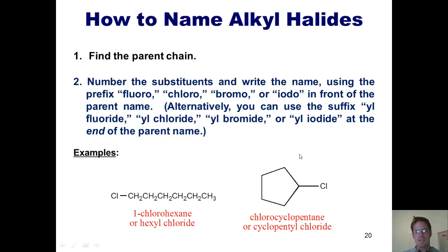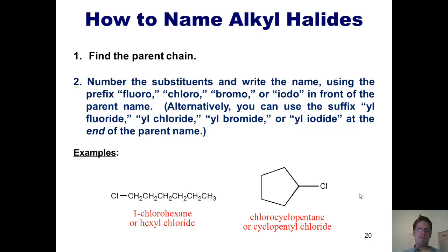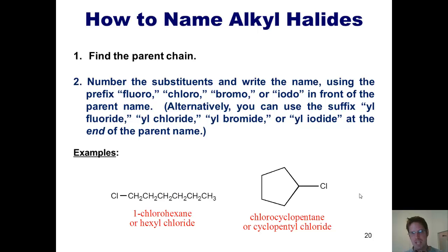You'll note for this particular example that there's no number — it doesn't say 1-chlorocyclopentane or 1-cyclopentyl chloride. The reason is because there's no ambiguity by leaving the number out. That's one of the interesting things about IUPAC naming in general: if you can leave out numbers and it's completely unambiguous, we often do, and it's considered correct. However, if there is ambiguity, you have to retain them.